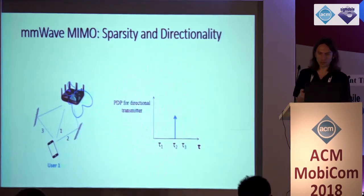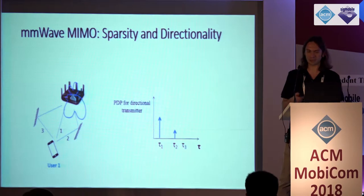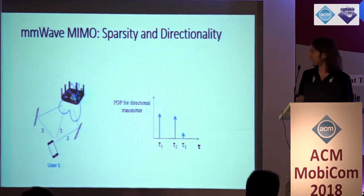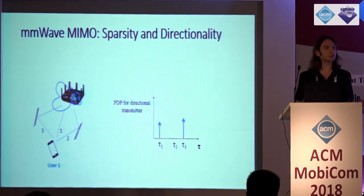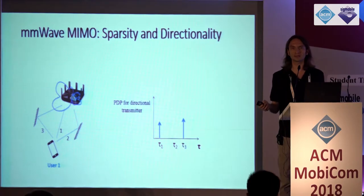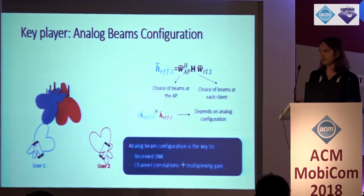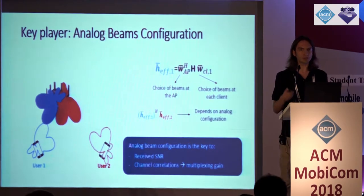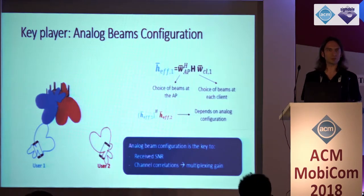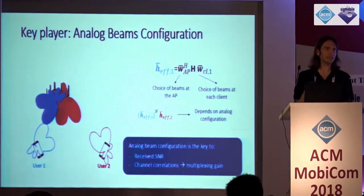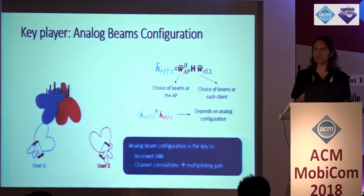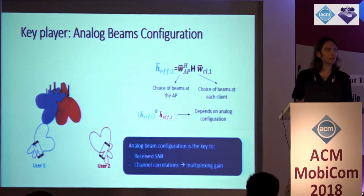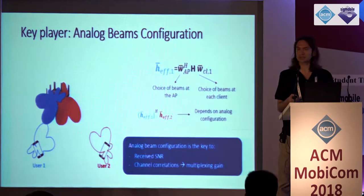Analog beam steering becomes a critical factor here because it impacts the effective channel. The choice of analog beam can amplify some dominant paths, attenuate some others, and completely eliminate some others. So the effective channel between the access point and a given client depends on the selection of analog beams on both sides. The analog beam configuration determines the SNR at each client and the channel correlations among a group of clients, which in turn determines the multiplexing gain.